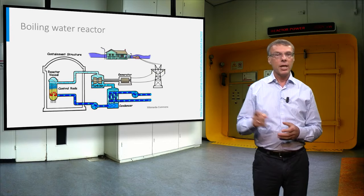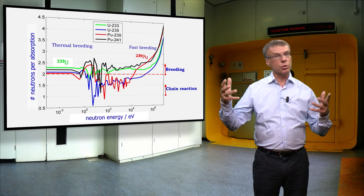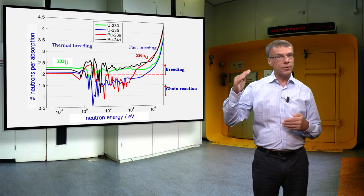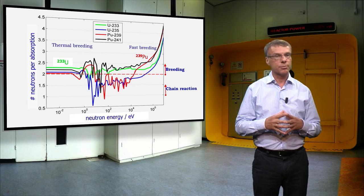This figure gives the number of neutrons per absorption in a fuel nuclide. It includes the effect that some neutron absorptions do not lead to fission, but to neutron capture. For a stationary fission chain reaction, the value of the number of neutrons per absorption should be larger than unity, because at least one new neutron is needed for a fission event in the next generation.